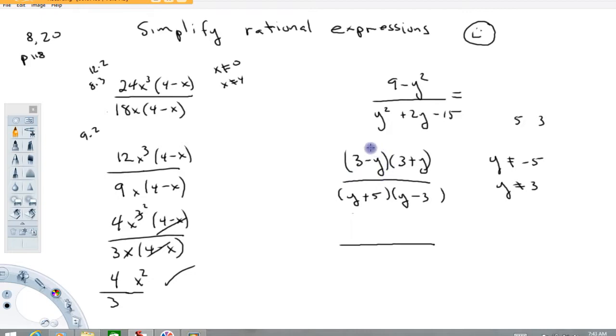If I take this quantity and factor negative 1 out of it, this is now going to be minus 3 plus y, and then times (3 + y). Bottom we'll just leave alone, (y + 5)(y - 3).